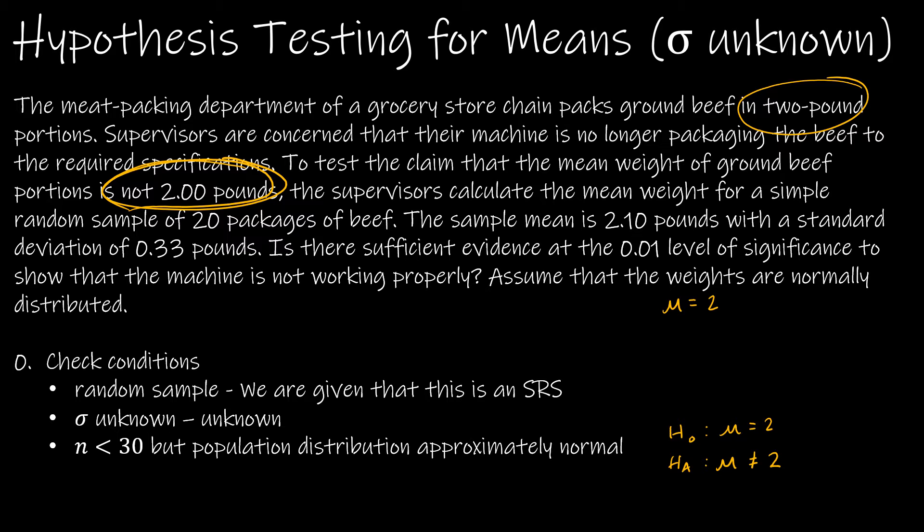The supervisors calculate the mean weight for a simple random sample of 20 packages of beef. The sample mean, X bar, is 2.1 pounds with a standard deviation of 0.33 pounds.